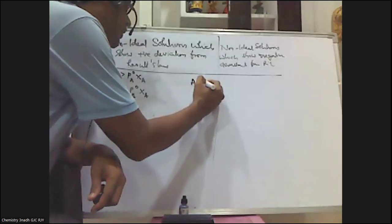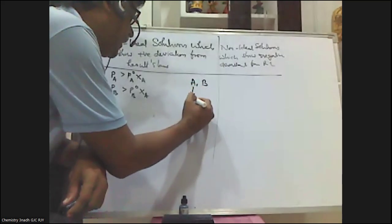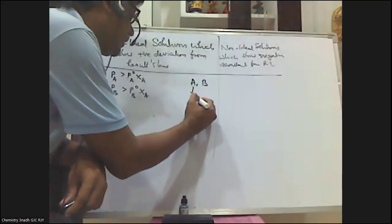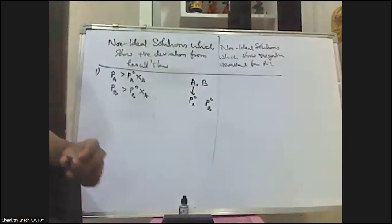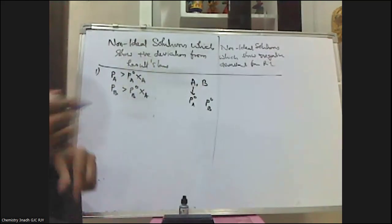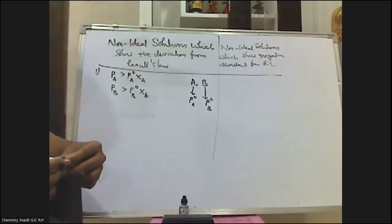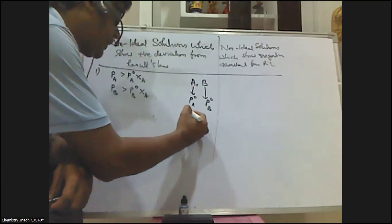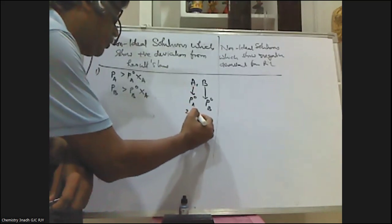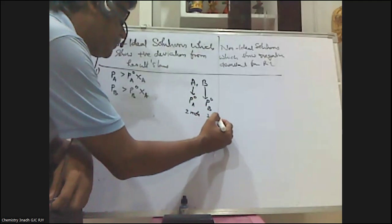For example, consider two liquids A and B. Let PA⁰ be the vapor pressure of pure A and PB⁰ be the vapor pressure of pure B. Let us assume we have taken two moles of pure A and three moles of pure B.